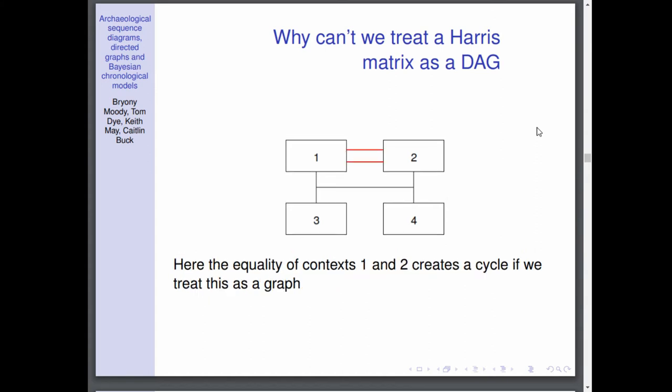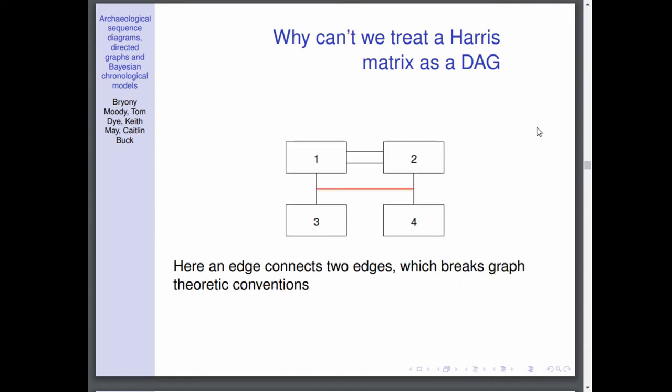Why is this not a DAG? We have two issues here. This equality of the contexts between one and two creates a cycle, particularly as well because it's horizontal you haven't got this order in. Another issue is that we have an edge connecting two other edges and this just breaks graph theoretic conventions. For the human eye you might be able to interpret it, but in mathematical graph theory it just doesn't really mean anything.